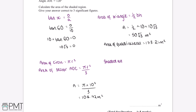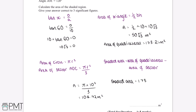Finally, we subtract the area of the sector from the area of the quadrilateral. Substituting in our values: 173.21 minus 104.72 gives us 68.49. Rounding to three significant figures, our final answer is 68.5 m².